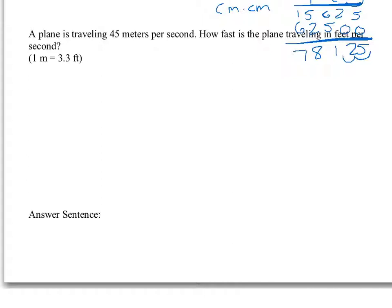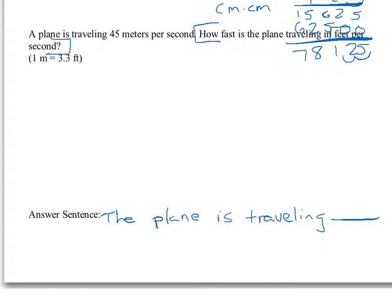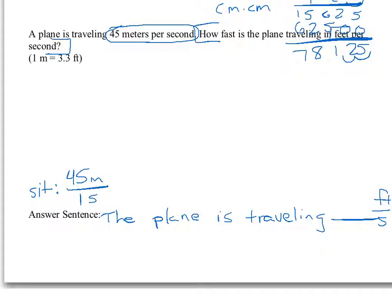The next problem: a plane is traveling 45 meters per second. How fast is the plane traveling in feet per second? This one is a little different. The answer units are actually a rate — feet per second. So our answer sentence is: 'The plane is traveling blank feet per second.' Our units are going to be feet over seconds. The situation given to us is also a rate: the plane is traveling at 45 meters over one second.